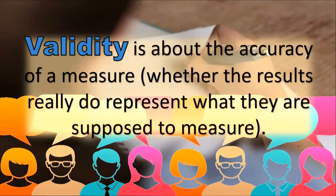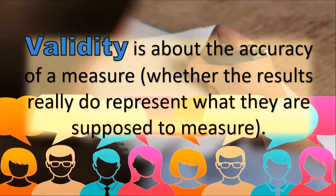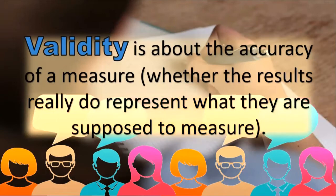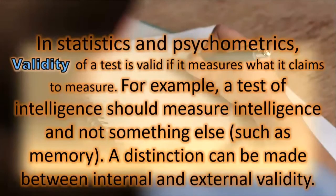In validity, validity is about the accuracy of a measure — whether the results really do represent what they are supposed to measure. In statistics and psychometrics, a test is valid if it measures what it claims to measure. For example, a test of intelligence should measure intelligence and not something else, such as memory.